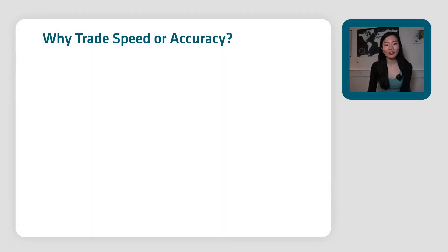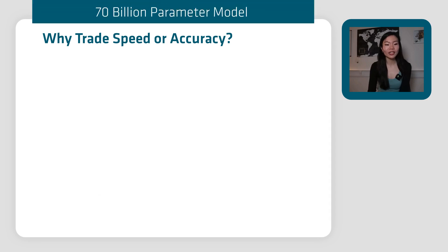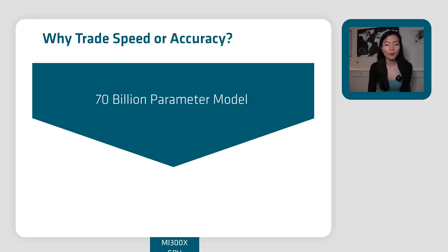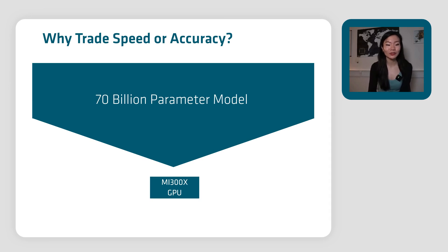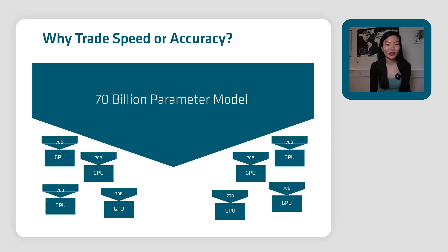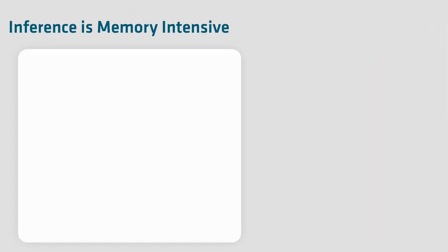But what if you could get a fast large model running? That's the best of both worlds. And that's exactly what the MI300 enables — you can fit a really large 70 billion parameter model on just a single MI300 GPU. You could also parallelize and run eight of these on a single node of eight MI300 GPUs. But essentially, this is what the MI300 enables you to do.